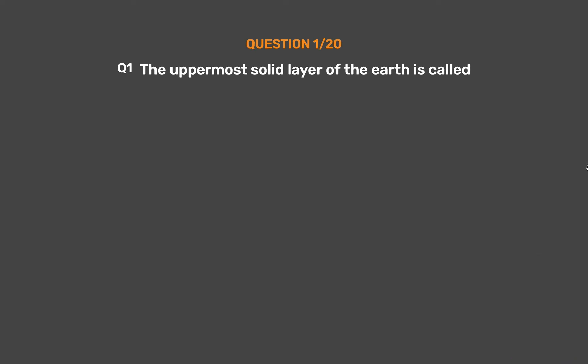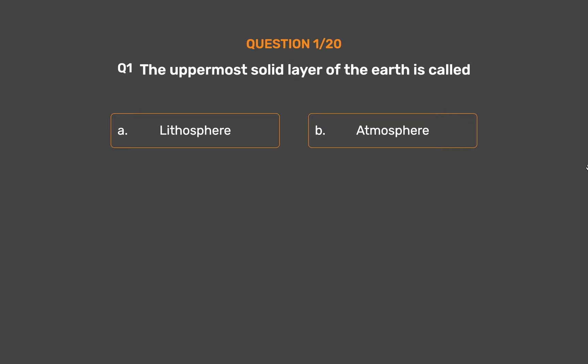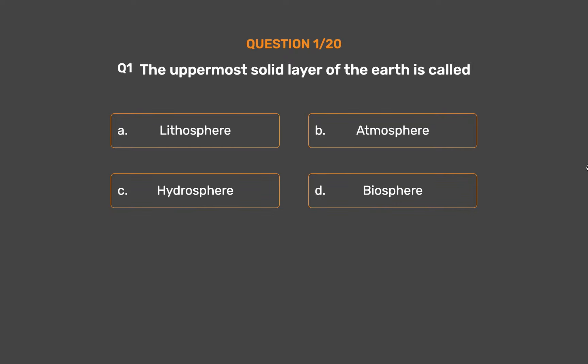Question Number 1. The uppermost solid layer of the Earth is called — Option A: Lithosphere. Option B: Atmosphere. Option C: Hydrosphere. Option D: Biosphere.